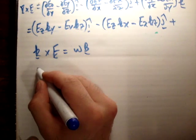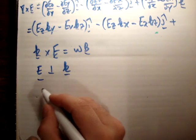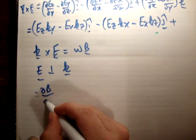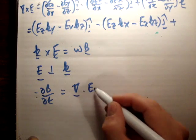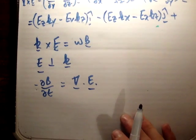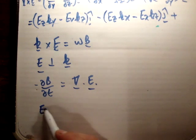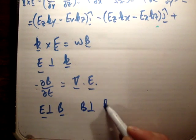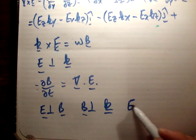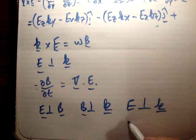We also know that E is perpendicular to k, and we know that negative ∂B/∂t equals the curl of E. So all we conclude as a result is that E is perpendicular to B, that B is perpendicular to k, and as we already knew, that E is perpendicular to k. And that's how you prove it.